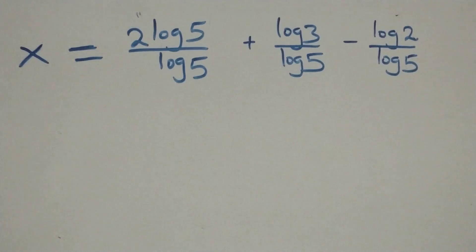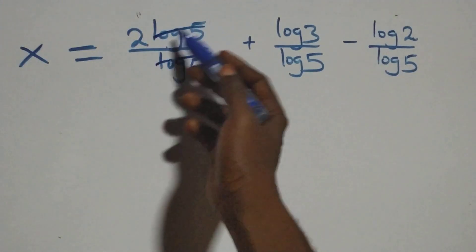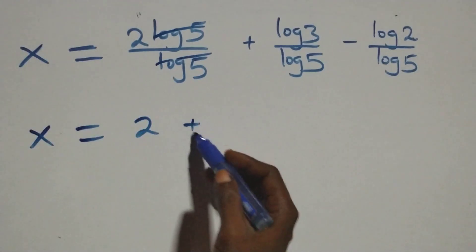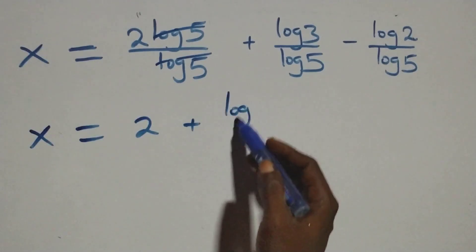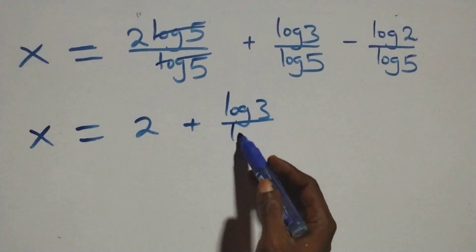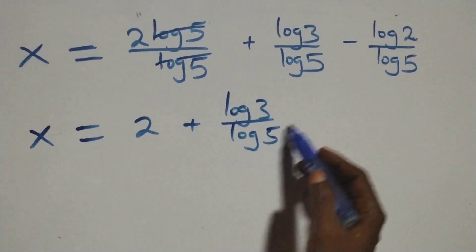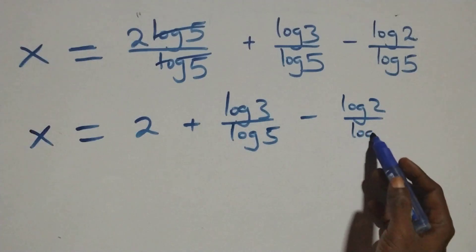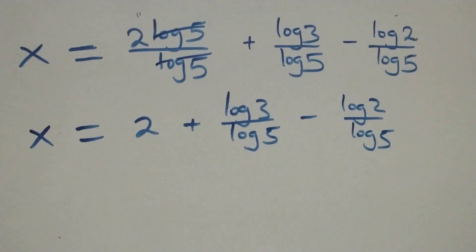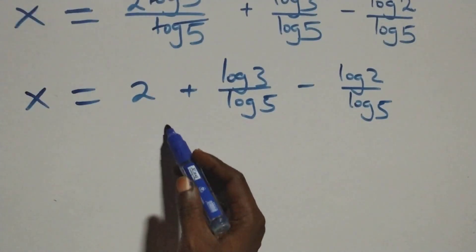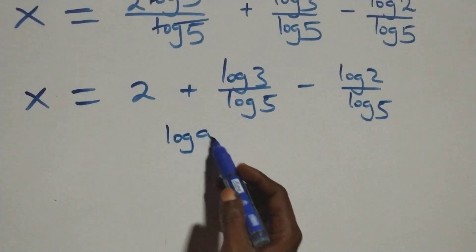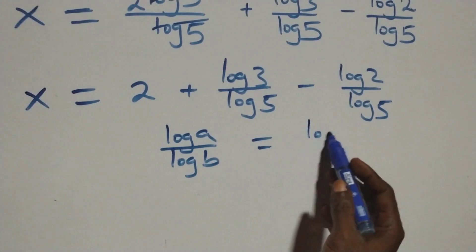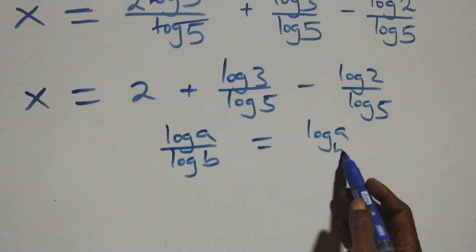Here log 5 cancels in the first term, giving x equals 2 plus log 3 over log 5, minus log 2 over log 5. From here we apply the change of base rule: log a over log b is the same thing as log a to base b.